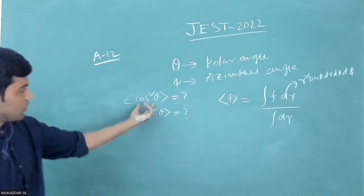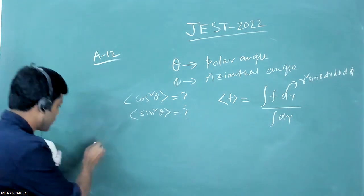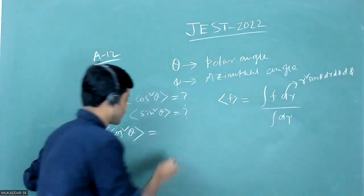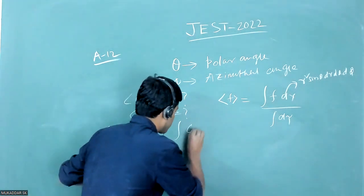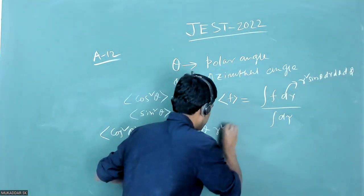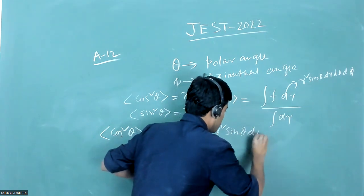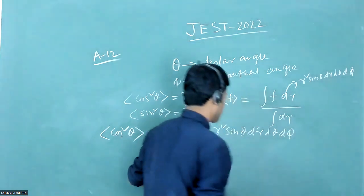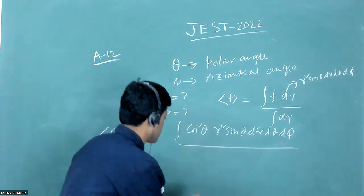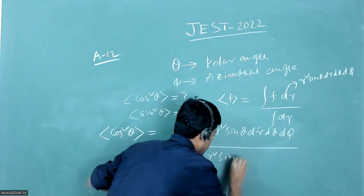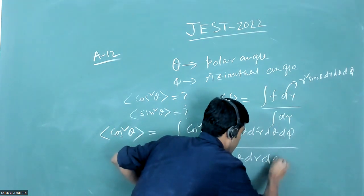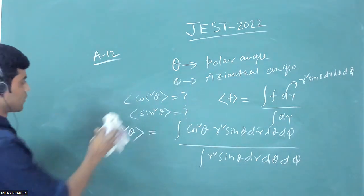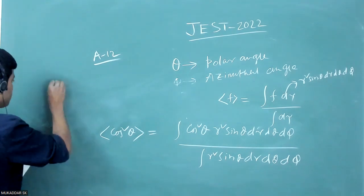So the function here is cosine square theta. Substituting that, the average value of cosine square theta will have cosine square theta times the volume element r square sine theta dr dθ dφ in the numerator, divided by the integral of r square sine theta dr dθ dφ in the denominator.